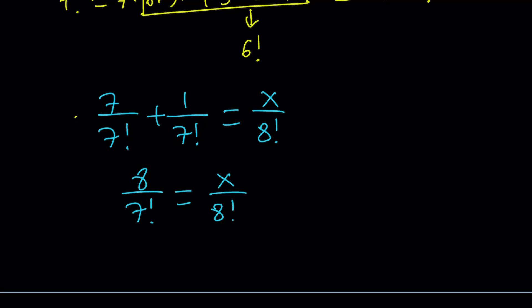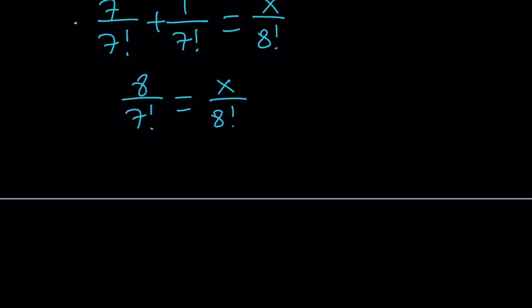I think at this point, you can go ahead and cross multiply. Let's do it. 8 times 8 factorial equals x times 7 factorial. Now, I want to simplify this further. 7 factorial is easy, it's 5,040. But 8 factorial is going to be 8 times that.